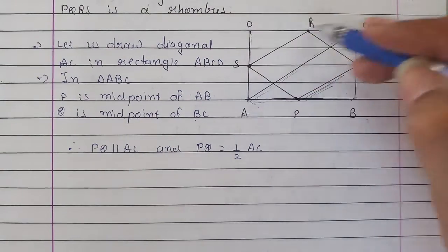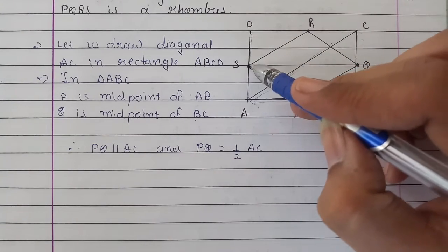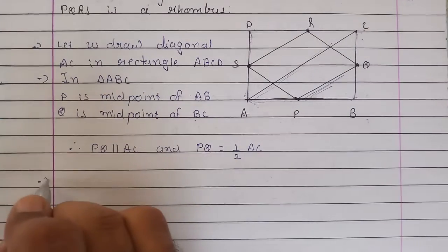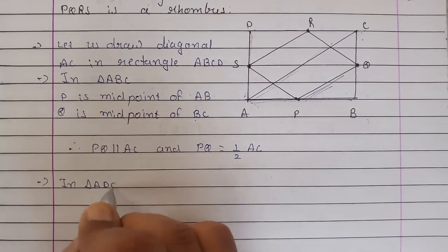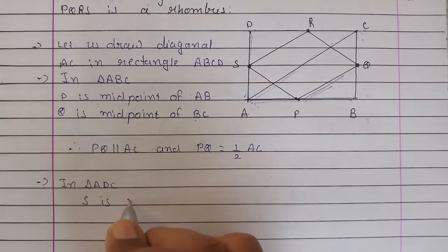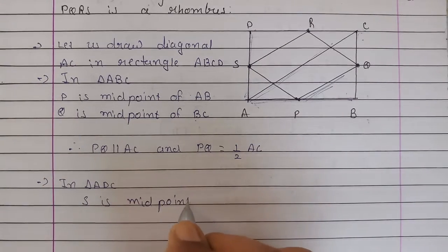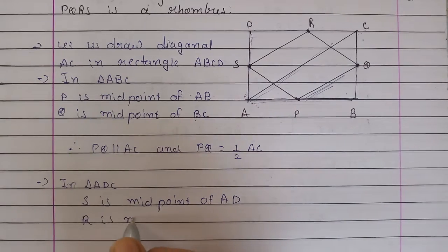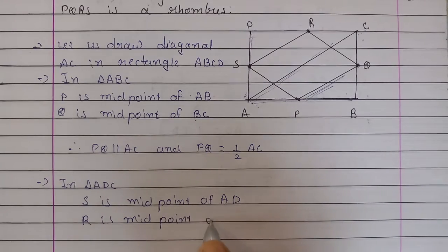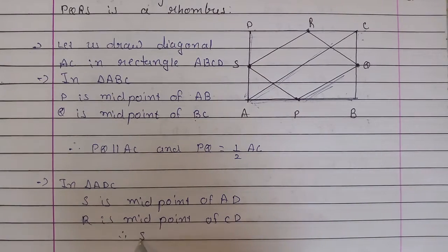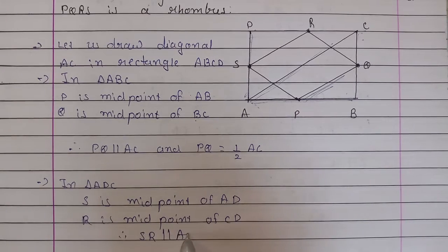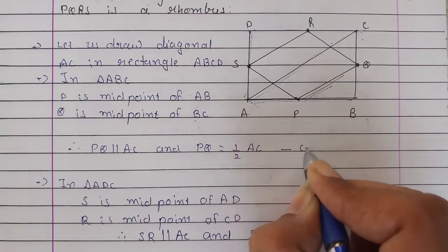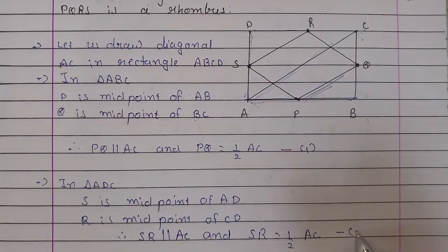Now we have triangle ADC where S is AD midpoint and R is midpoint of CD. In triangle ADC, S is midpoint of AD and R is midpoint of CD. Therefore, SR is parallel to AC and SR will be half of AC. Say this as equation 1 and this one as equation 2.